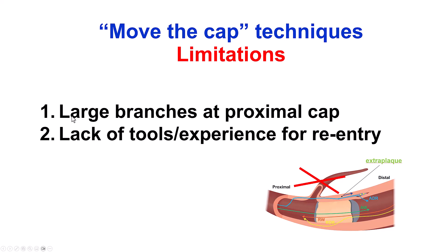What are the limitations of the move-the-cap techniques? First, if there is a major branch proximal to the proximal cap and we start the dissection proximal to that branch, those branches are likely to be occluded. We try to avoid this technique where there are important branches — for example, a large diagonal branch or a large obtuse marginal into the circumflex. Also, getting into the extra-plaque space is only the first step; the operator must also have the skills and tools to re-enter into the distal true lumen using stingray or other re-entry techniques.